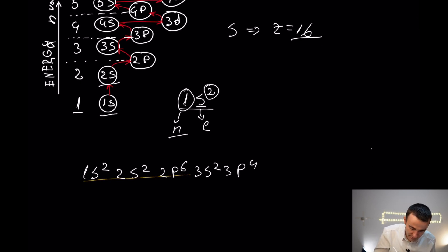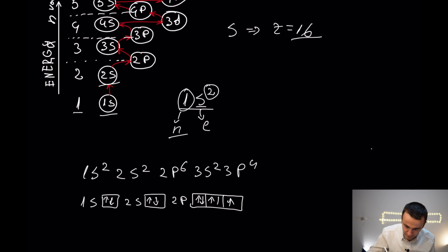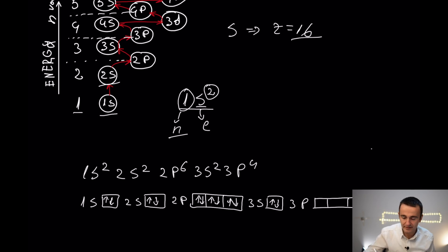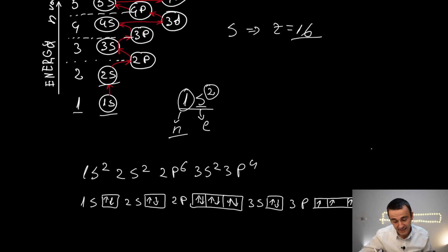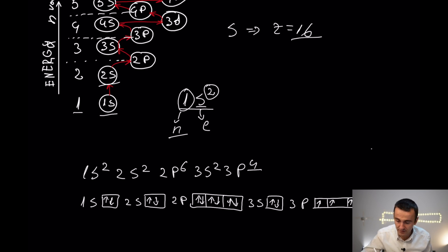As I'm filling with electrons, I am respecting Hund's rule, which says we are going to fill orbitals singly and after that pairing begins. Like in this case we have 4 electrons in the p orbitals — we place 3 singly and after that we pair the fourth one.